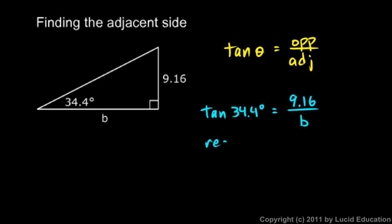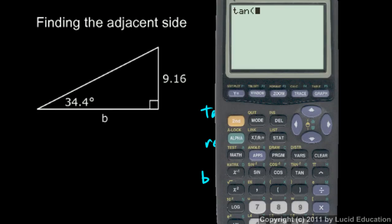Then we rearrange that algebraically to solve for b. So b ends up being 9.16 divided by the tangent of 34.4 degrees. The calculator can figure this out. Take your calculator and type 9.16 divided by the tangent of 34.4. That's our answer: 13.4.